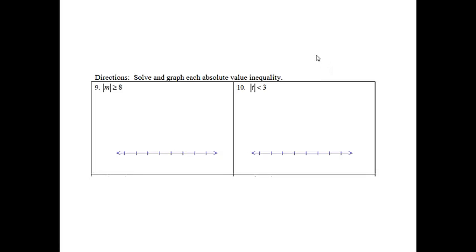Direction: solve and graph each absolute value inequality. This one, the way that I taught you how to do it, will have two different inequalities. We're going to have m is greater than or equal to 8, and our second one is going to be m is less than or equal to negative 8.